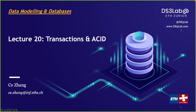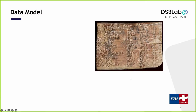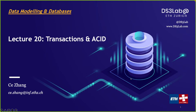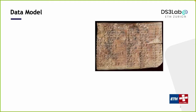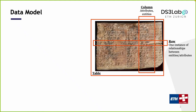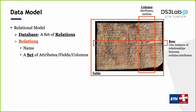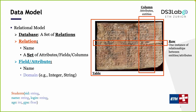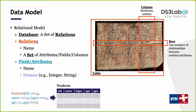Starting today we are going to switch gears and talk about something quite different compared to what we have been discussing so far. We know quite a lot about databases: the relational model, how to organize data into relations, each relation looking like a table containing a bunch of attributes with entities of the same type. A database contains a set of relations; each relation in a schema has a name, a set of attributes, and each attribute has a name and a domain.